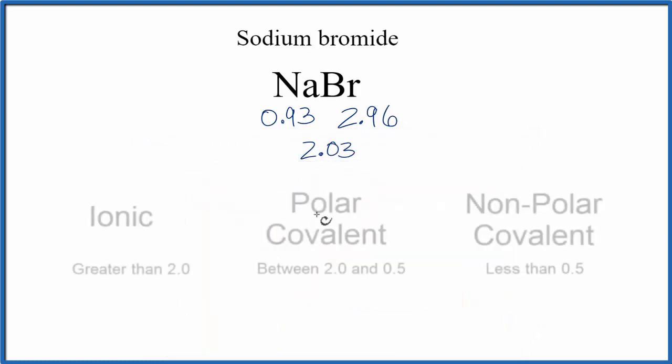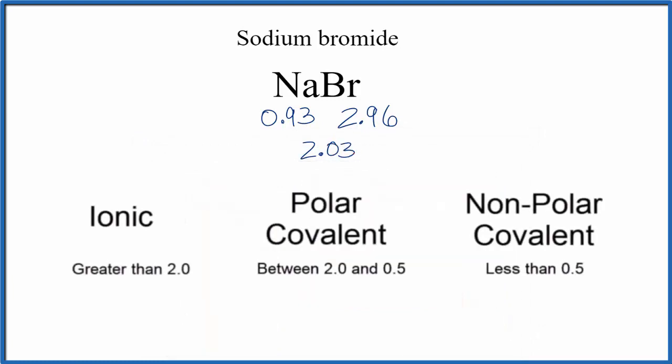2.03 is greater than 2.0, so NaBr is considered to be an ionic compound. In an ionic compound, the valence electron on the sodium will be transferred to the bromine, and that will form the ionic bond. This is Dr. B, figuring out whether NaBr, sodium bromide, is ionic or covalent. Thanks for watching.